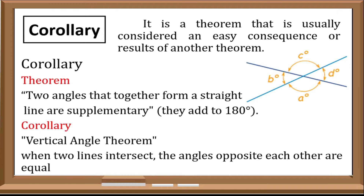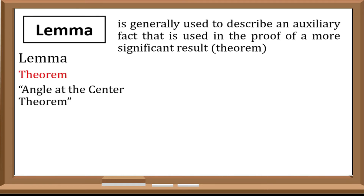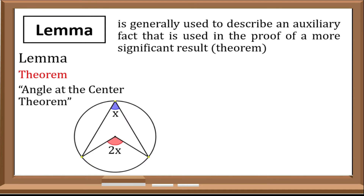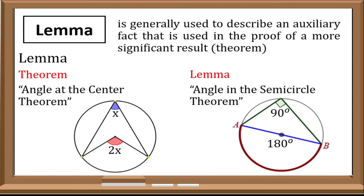The resulting theorem is the vertical angle theorem: when two lines intersect, the angles opposite each other are equal. Now let us have lemma. A lemma is generally used to describe an auxiliary fact that is used in the proof of a more significant result, which is a theorem. Since a lemma is a theorem which supports another theorem, here is an example: our main theorem is the angle at the center theorem. Its auxiliary fact — which results in a theorem called the lemma — is the angle in the semicircle theorem. This theorem is just a result of the main theorem, which is the angle at the center theorem.